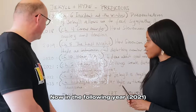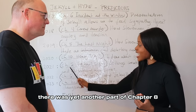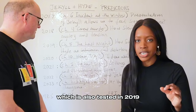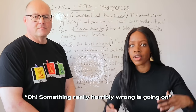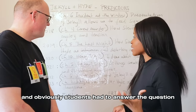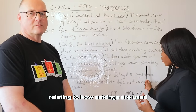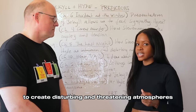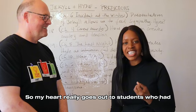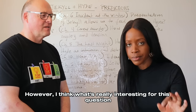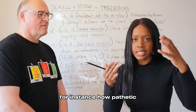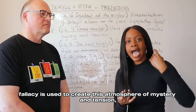In 2021, students were given yet another part of chapter eight — the incident of the last night, which was also tested in 2019 — where Poole realises something horribly wrong is going on and goes to find Utterson. Students had to answer a question about how settings are used to create disturbing and threatening atmospheres. I honestly feel this was the hardest question of all the past papers, so my heart really goes out to students who had to answer it.